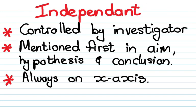Let's have a look at the independent variable. There are three things you need to know about it. First, it is controlled by the investigator — I always want you to think of I, the investigator, controlling the independent variable. Secondly, it is mostly mentioned first in the aim, hypothesis, and conclusion. And number three, it is always on the x-axis when you draw a graph.